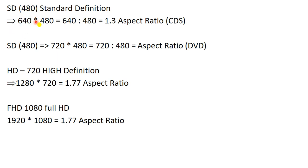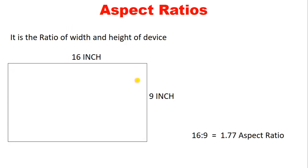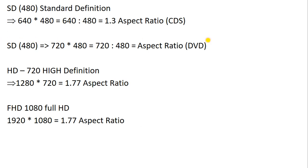That TV is of 640×480. 640×480 means 640 pixels of width and 480 pixels of height. If we divide 640 by 480, we get the answer 1.3, and that is called the aspect ratio of 640×480. This standard definition resolution was used in CDs — it was the first version of standard definition.